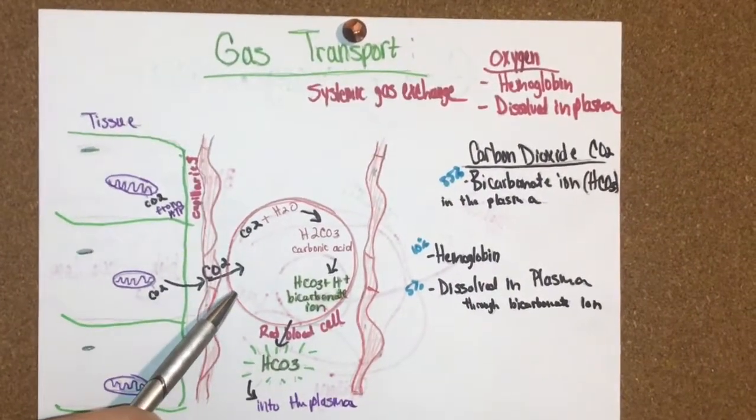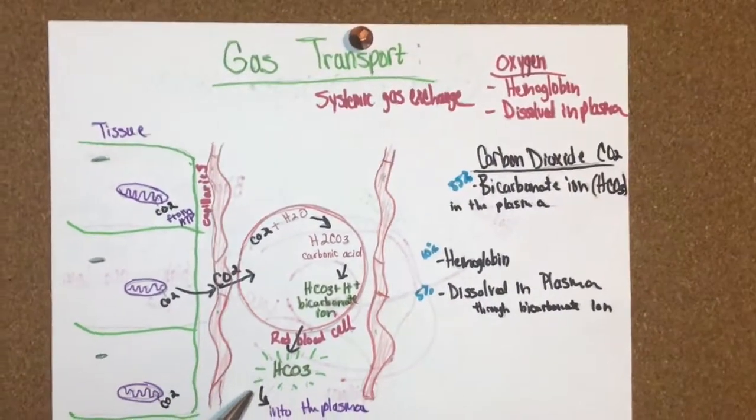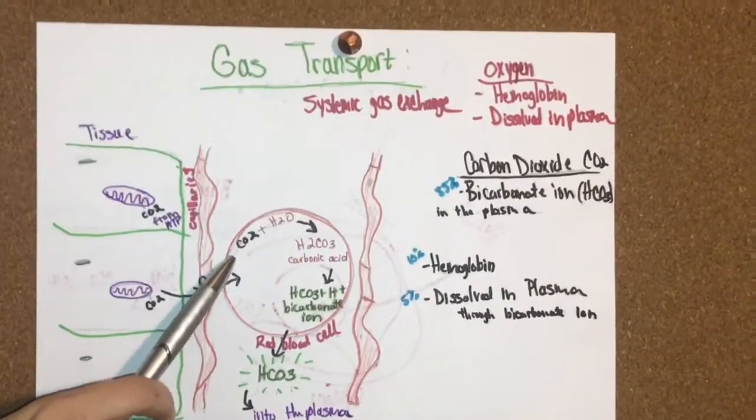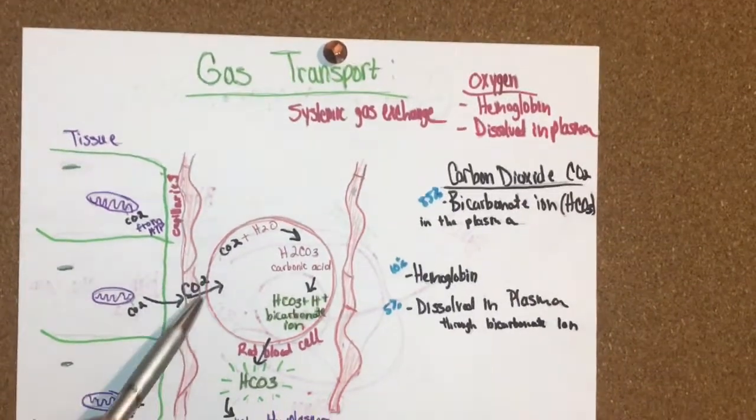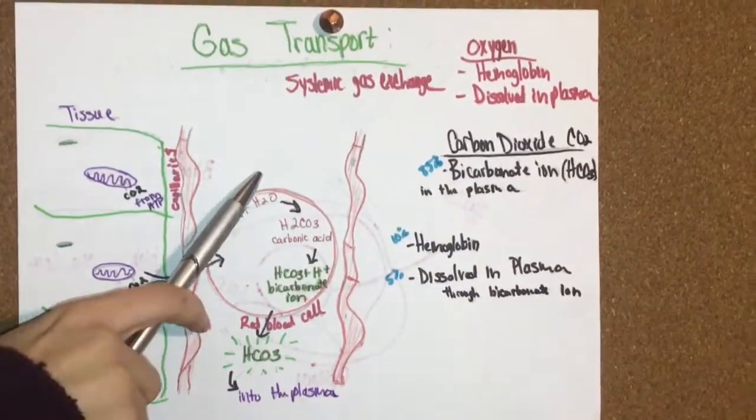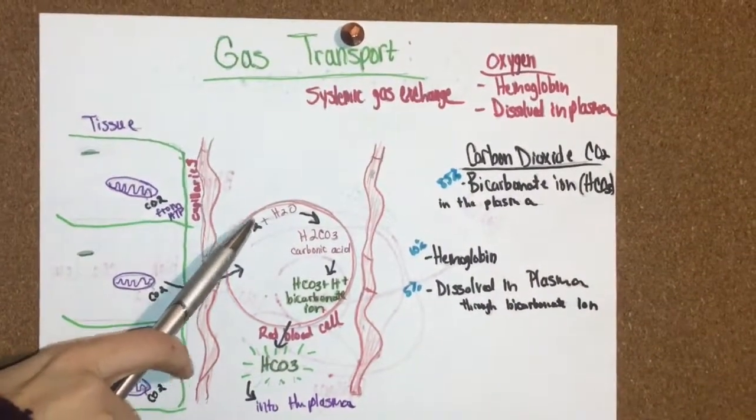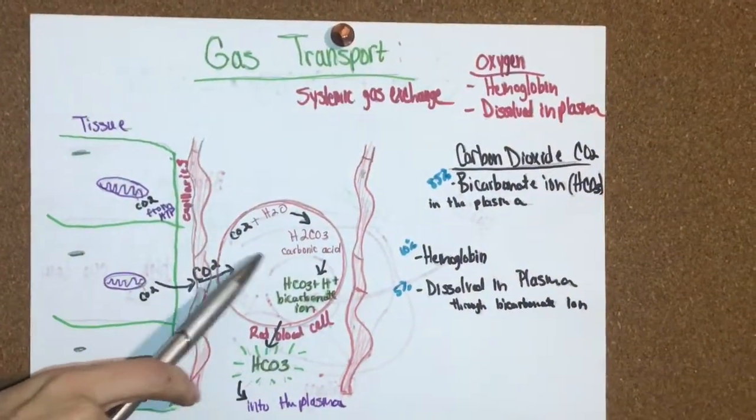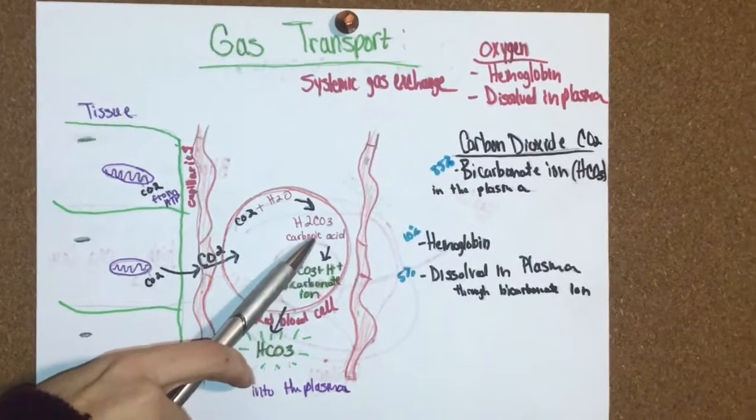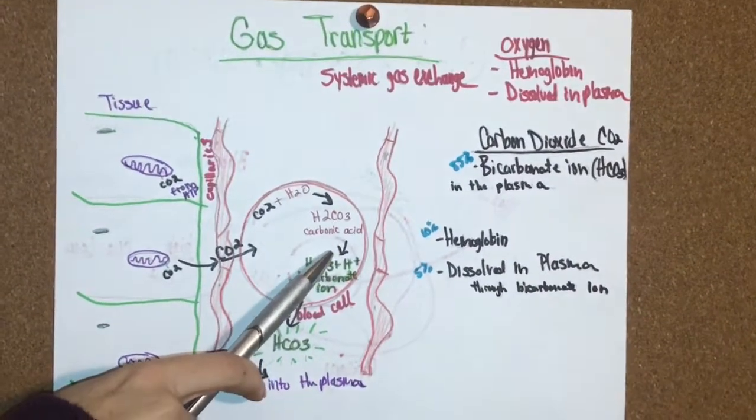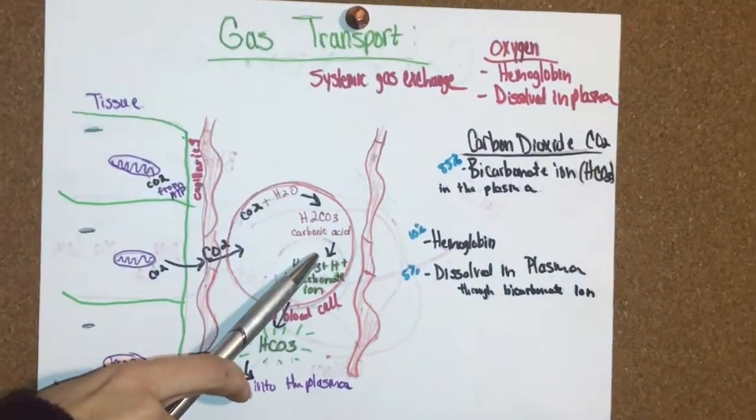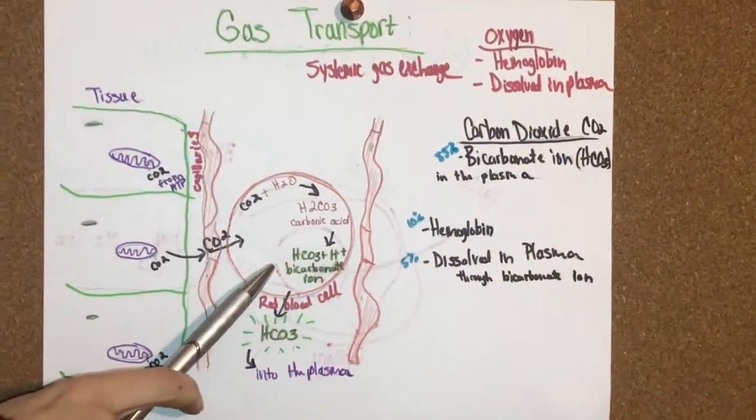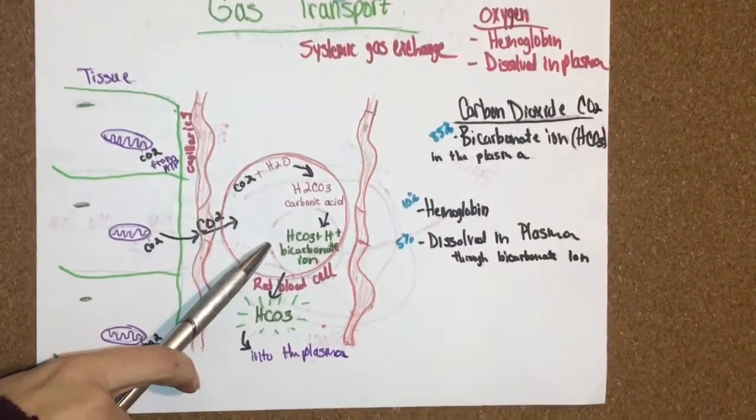Some dissolves in the water outside of the cell, but most goes into the cell, into the water. That's where carbon dioxide combines with H2O. They meet up in the red blood cell and the two of them form carbonic acid. The carbonic acid then dissociates into bicarbonate ions.